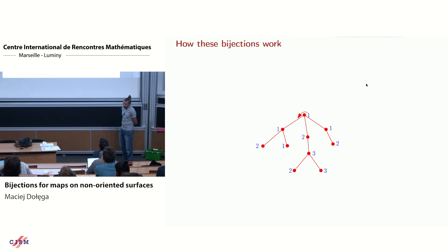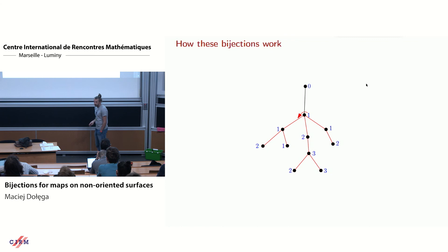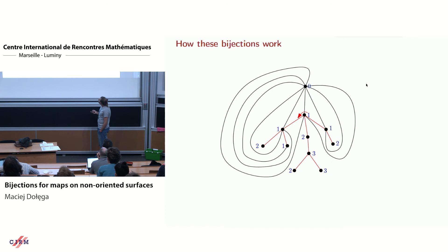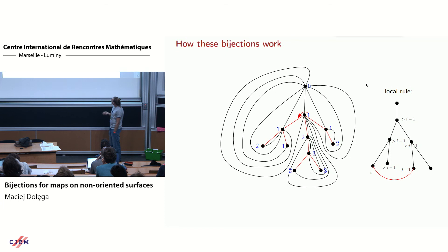The moral is that instead of counting maps with n edges, we can count bipartite quadrangulations with n faces and get the same result. Let me show how these bijections work, starting from the labeled bijection. Given a well-labeled tree, to associate a quadrangulation: first, add a new vertex labeled zero. Then walk around your tree and connect every corner labeled 1 to vertex zero. In general, you use the local rule of connecting a corner labeled i to the first corner with label i minus one encountered walking around your tree.